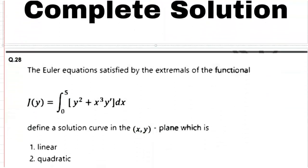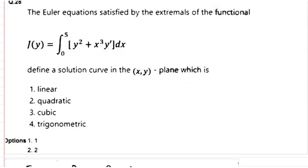The Part B question says: the Euler's equation satisfied by the extremal of the functional J(y) equals the integration between 0 to 5 of y squared plus x squared times x cubed y dash dx, defines a solution curve in the (x,y) plane which is: 1. linear, 2. quadratic, 3. cubic, 4. trigonometric. So we have an extremal function where Euler's equation is satisfied, and we have to show whether our function will be linear, quadratic, cubic, or trigonometric. This is a single correct option question.